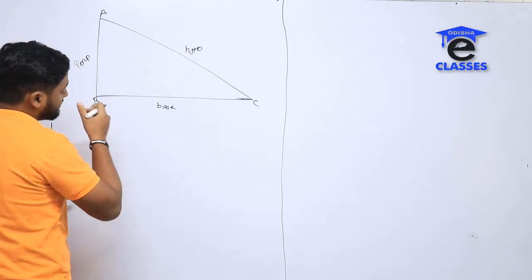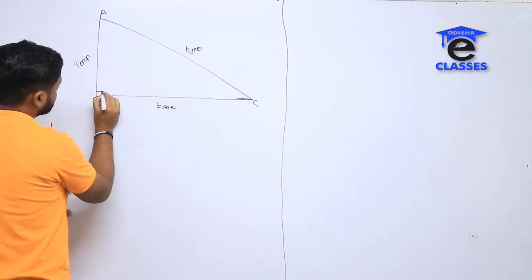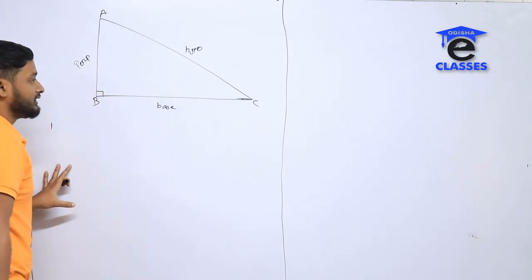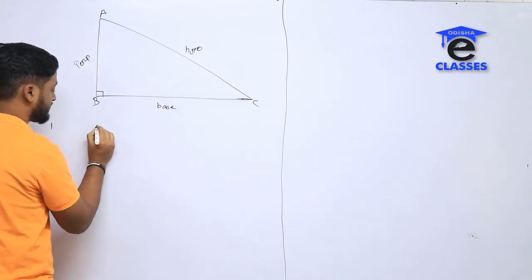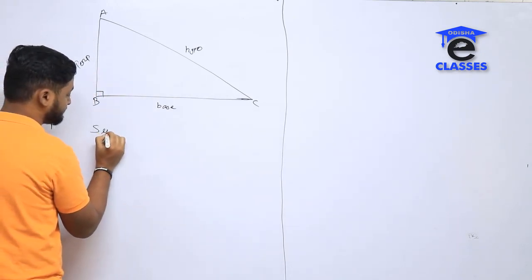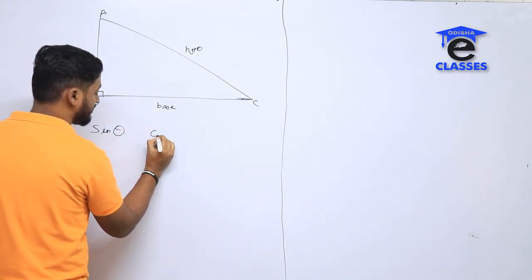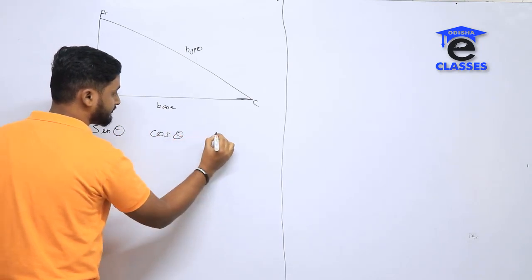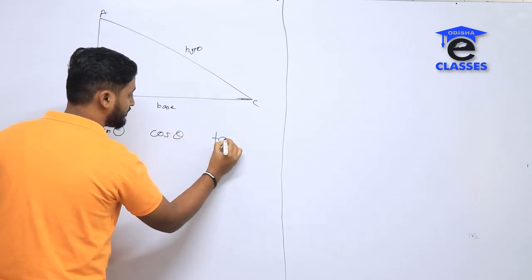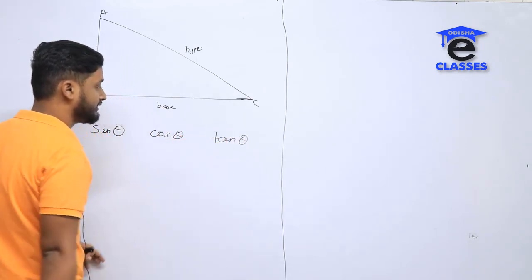We have trigonometry functions. We can see three functions: sin theta, cos theta, and tan theta.